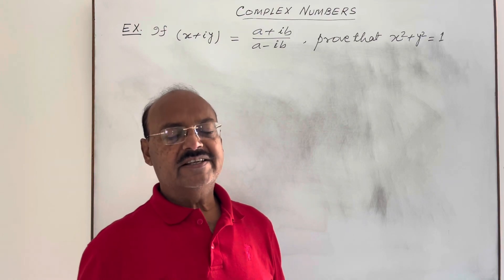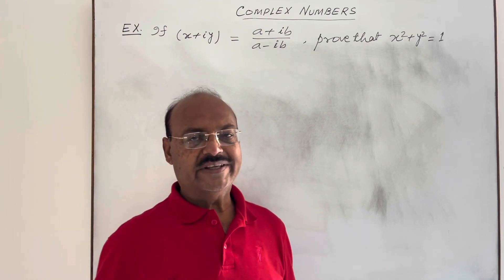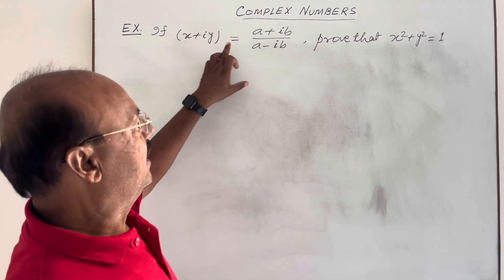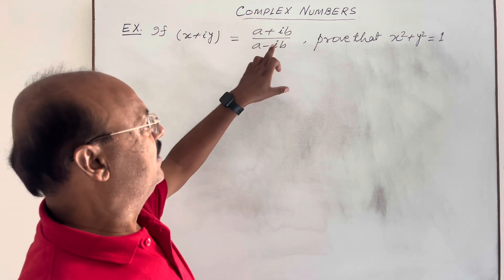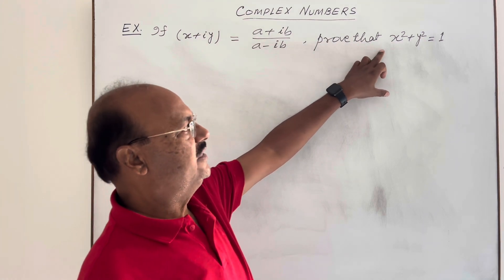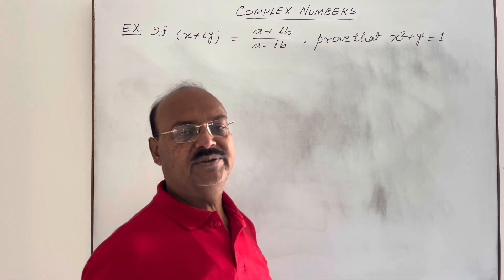Here we are discussing an interesting question from the chapter complex numbers. The question is: if x plus iy is equal to a plus ib upon a minus ib, then prove that x square plus y square is equal to 1.